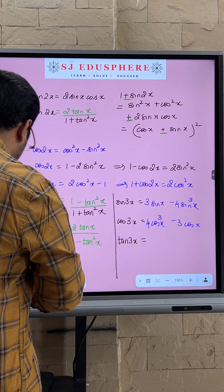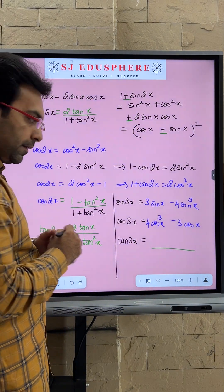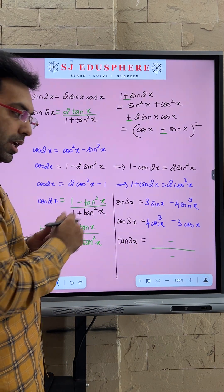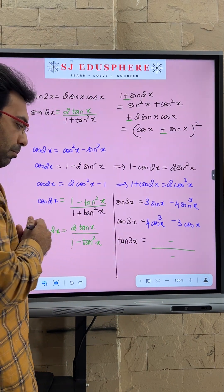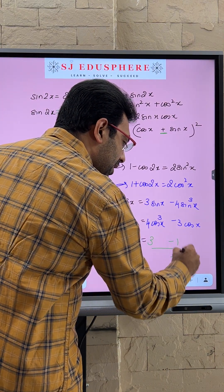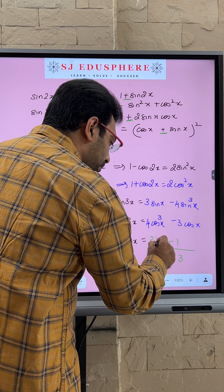Similarly, tan will become sin upon cos, that means numerator upon denominator. Sin upon cos is minus upon minus. We always know tan has the number 1 over here. So that tells me numerator has 31, denominator has 13, 3 ka power 1, 1 ka power 3.